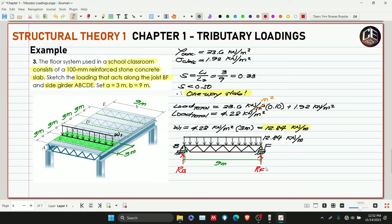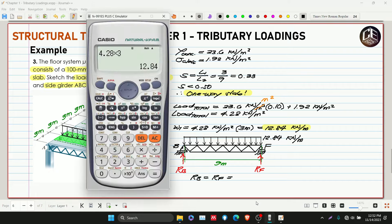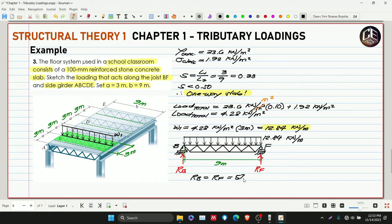We can see the support and loadings are symmetrical, so RB and RF will split the 12.84. By summation of forces vertical, RB is equivalent to RF, which equals 12.84 multiplied by the length of 9 meters, then divided by 2. This gives us 57.78 kilonewtons.